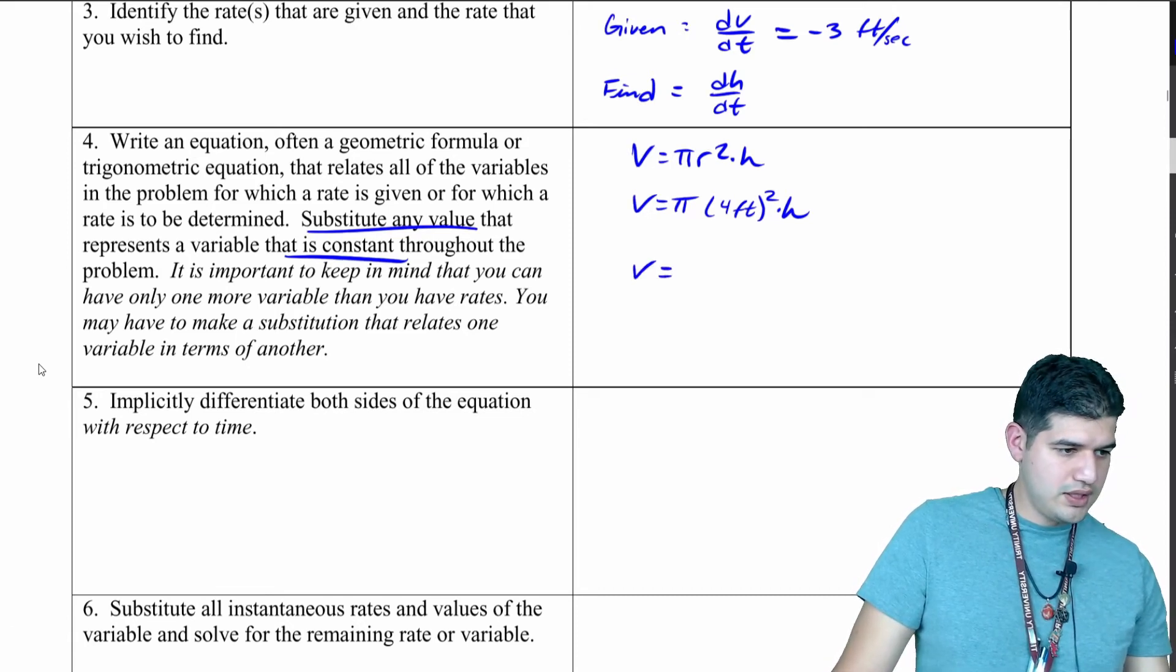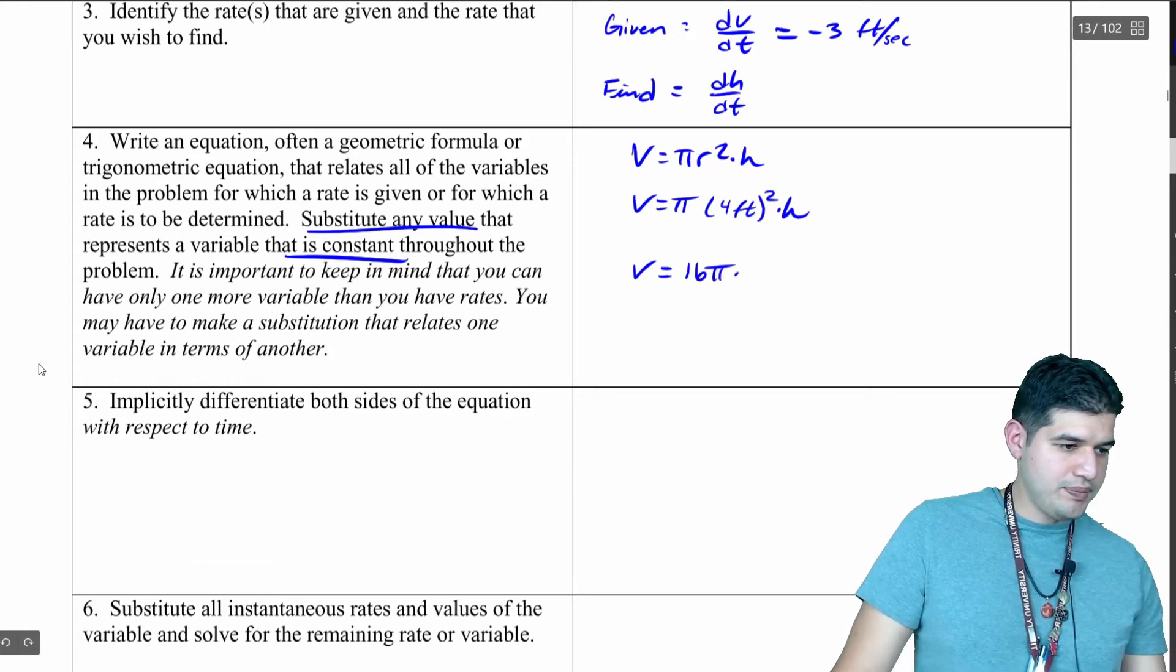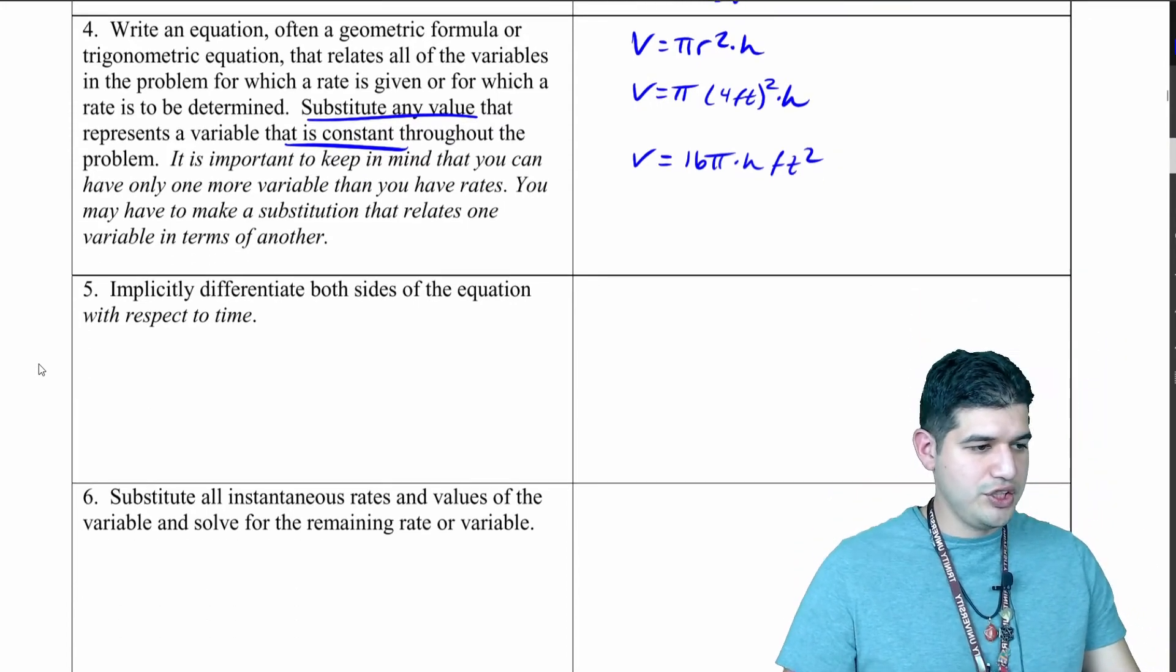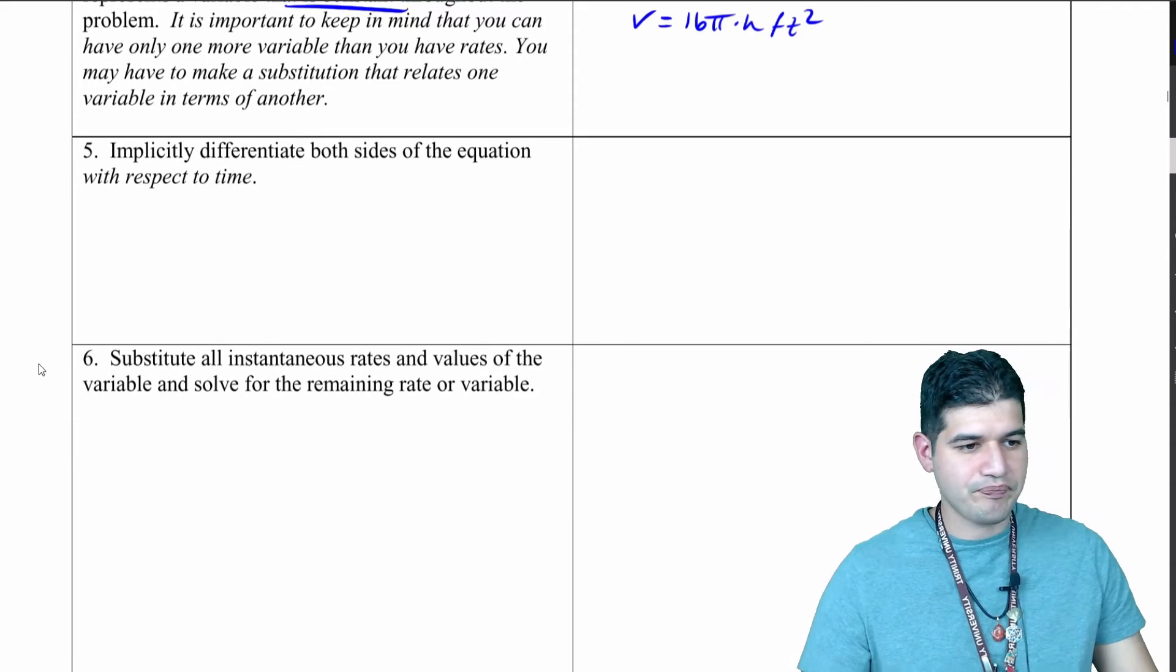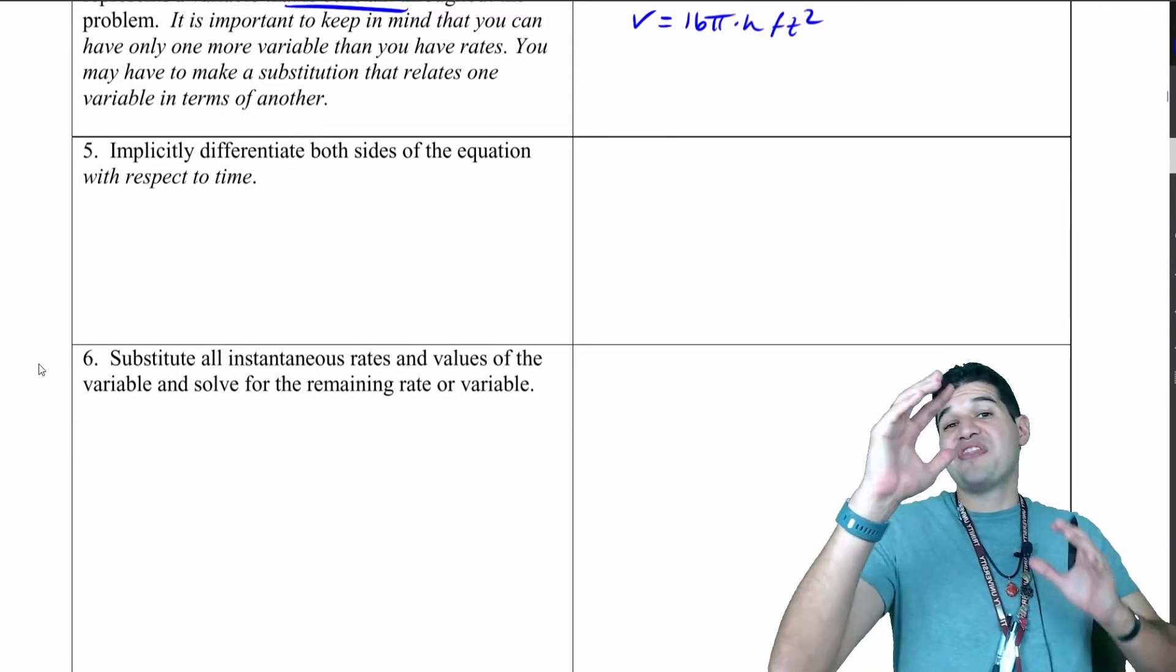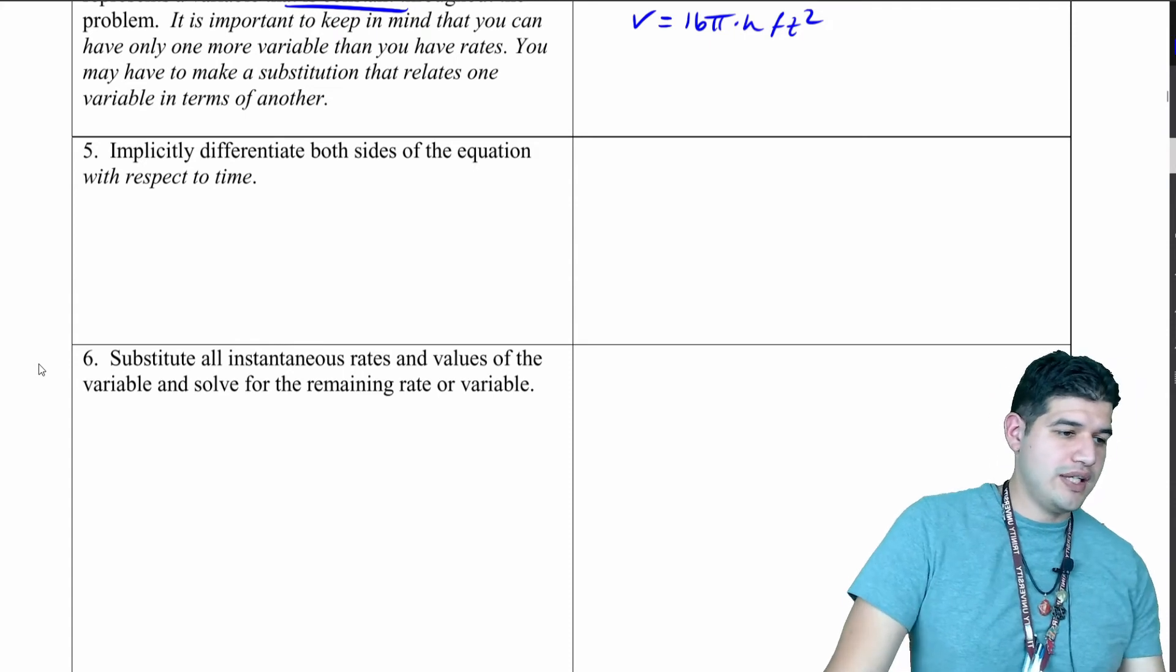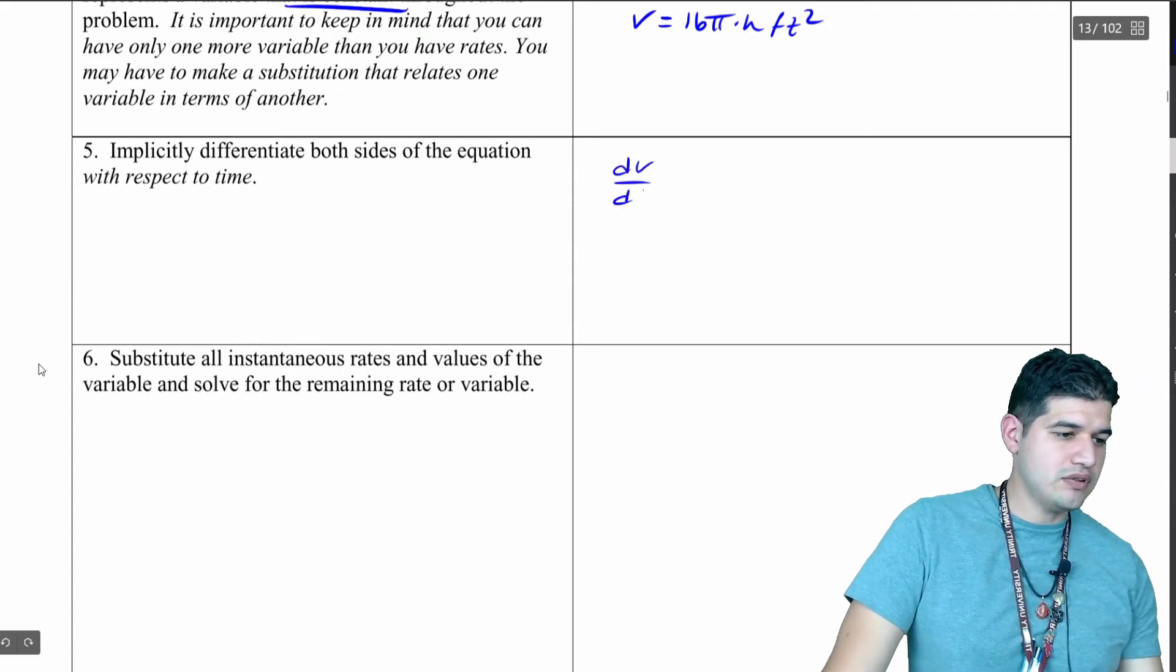Let's simplify this a little bit. We're going to go V equals, let's see, 4 squared is 16, so that's going to be 16π times the height, and then we still have square feet in the end. Now of that function, I'm going to take the derivative.